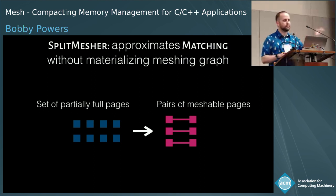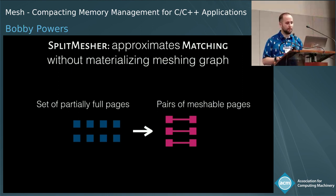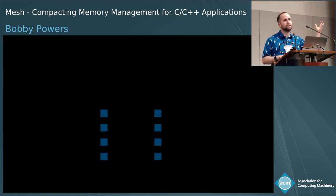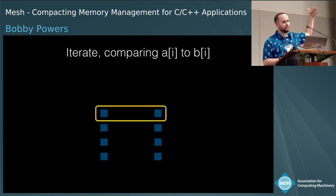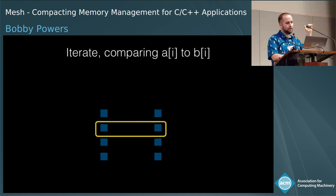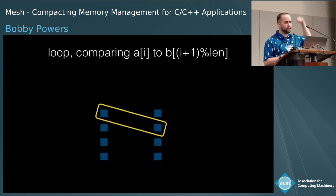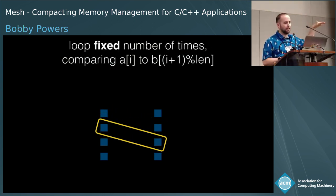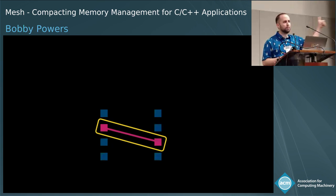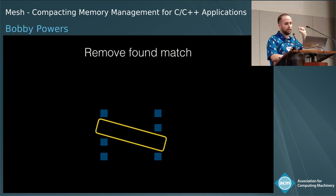Split mesher takes a set of partially full pages as input and yields pairs of pages to be meshed together. It splits the input pages into two lists, then marches down comparing items on the left to items on the right to see if they are meshable. When it gets to the bottom, we start again at the top, incrementing the offset on the right by one and continuing. We do this looping a fixed number of times. When we find a meshable pair, we remove them from the list and set them aside.